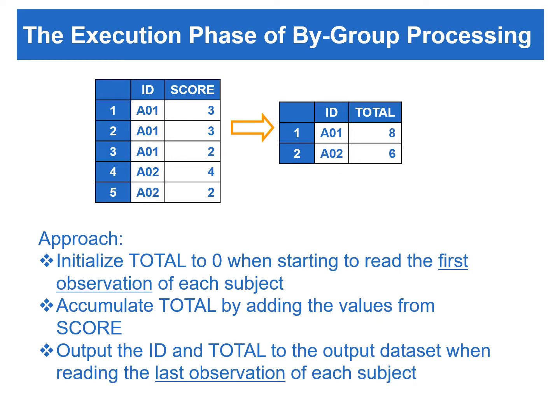Suppose that we would like to calculate the total scores for each subject. To create a variable — say total — that is the total score for each subject, we need to initialize total to zero when starting to read the first observation of each subject. Then total can be accumulated by adding the value from the score variable to total for each observation. In the end, we can output the total score when reading the last observation of each subject. Therefore, we need to utilize by-group processing and use ID as the by-variable.